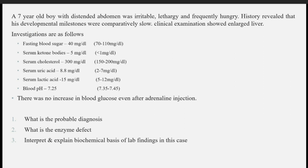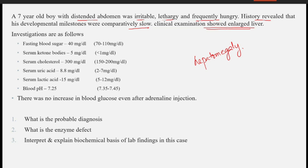A seven-year-old boy with distended abdomen was irritable, lethargic, and frequently hungry. History revealed that his developmental milestones were comparatively slow, and clinical examination showed enlarged liver — that is, hepatomegaly — in addition to distended abdomen, irritability, lethargy, and frequently hungry. Investigations show fasting blood sugar is 40 mg/dL, which is comparatively low, revealing this patient has hypoglycemia — specifically fasting hypoglycemia.